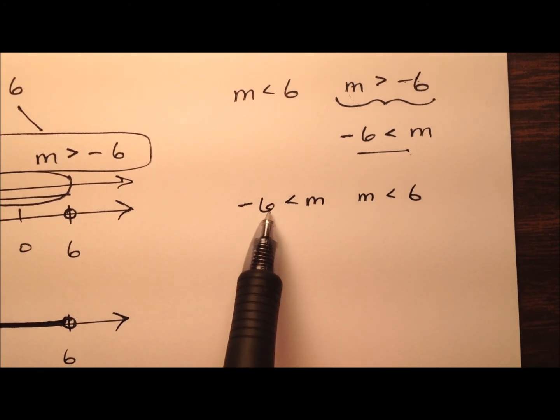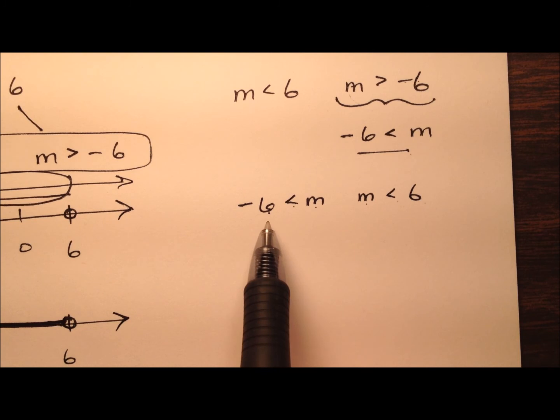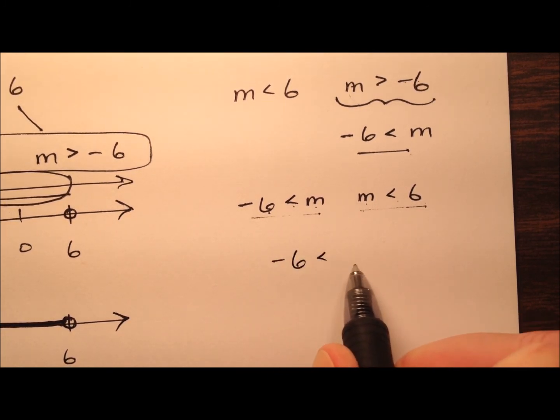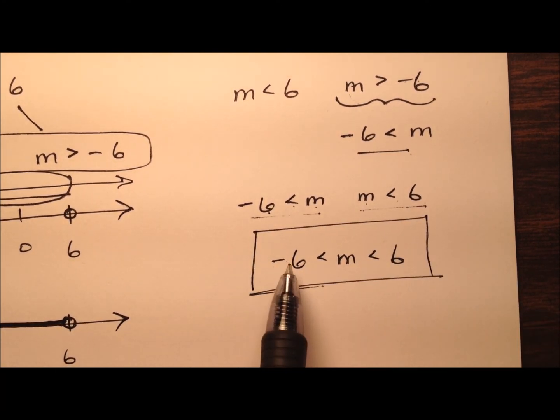And now I want to put this one right next to the other one. So it looks like negative 6 is less than m, m is less than 6. So instead of having two separate inequalities, what I can do is combine them together to have a trichotomy where it says negative 6 is less than m is less than 6.